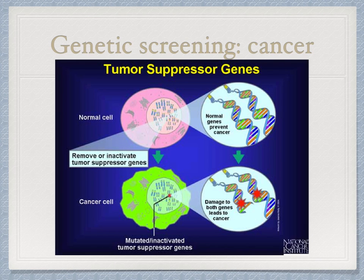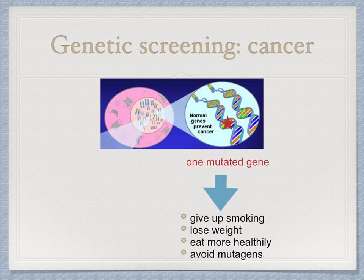Some people inherit one mutated tumor-suppressor gene, so these individuals are at a greater risk of developing cancer. If a mutated gene is detected by genetic screening, individuals at greater risk of cancer can make informed decisions about their lifestyle and treatment. They can choose to give up smoking, lose weight, eat more healthily, and avoid mutagens as far as possible. They can also go for regular checks that will lead to early diagnosis.